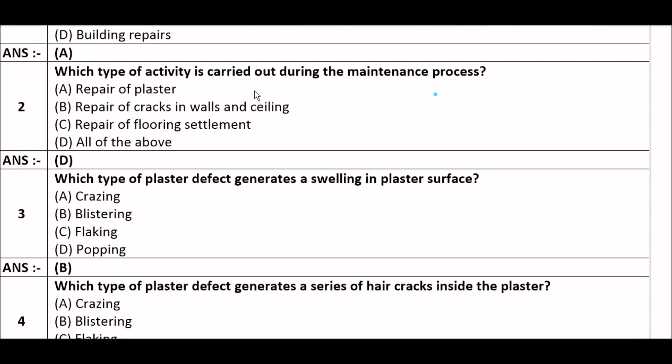Next question: Which type of activity is carried out during the maintenance process? Option A: repair of plaster, option B: repair of cracks in walls and ceiling, option C: repair of flooring settlement, option D: all of the above. The right answer is option D — all of the above. Repair of plaster, repair of cracks in walls and ceiling, and repair of flooring settlement are all included in the maintenance process.